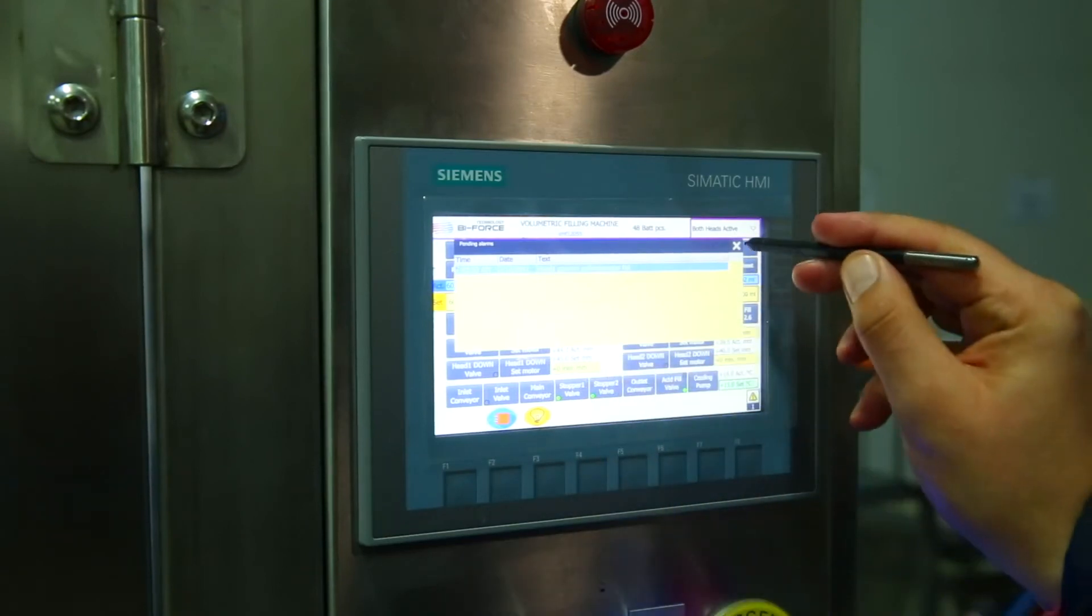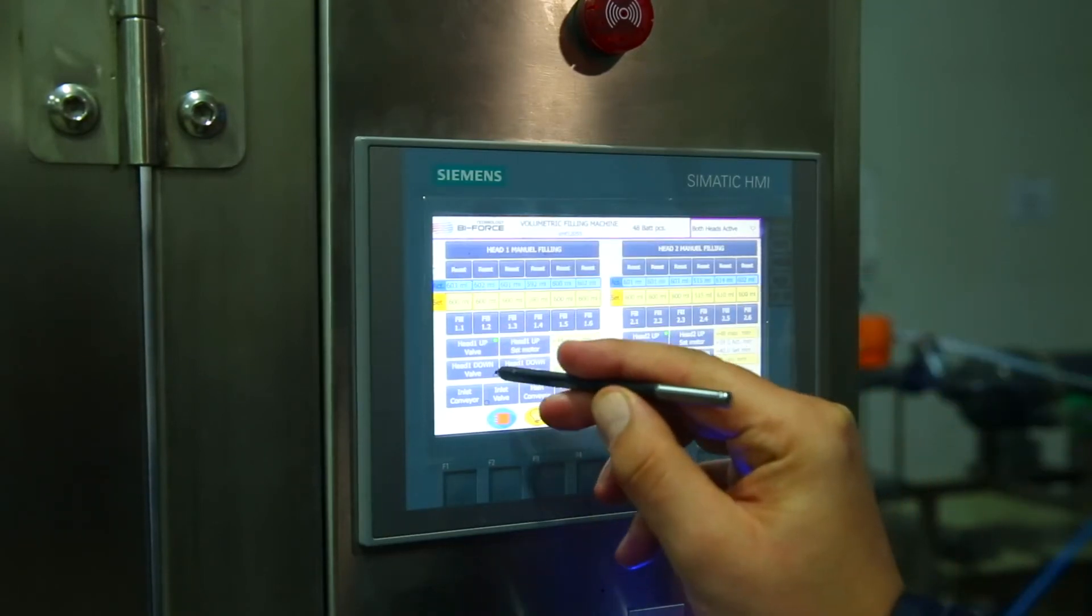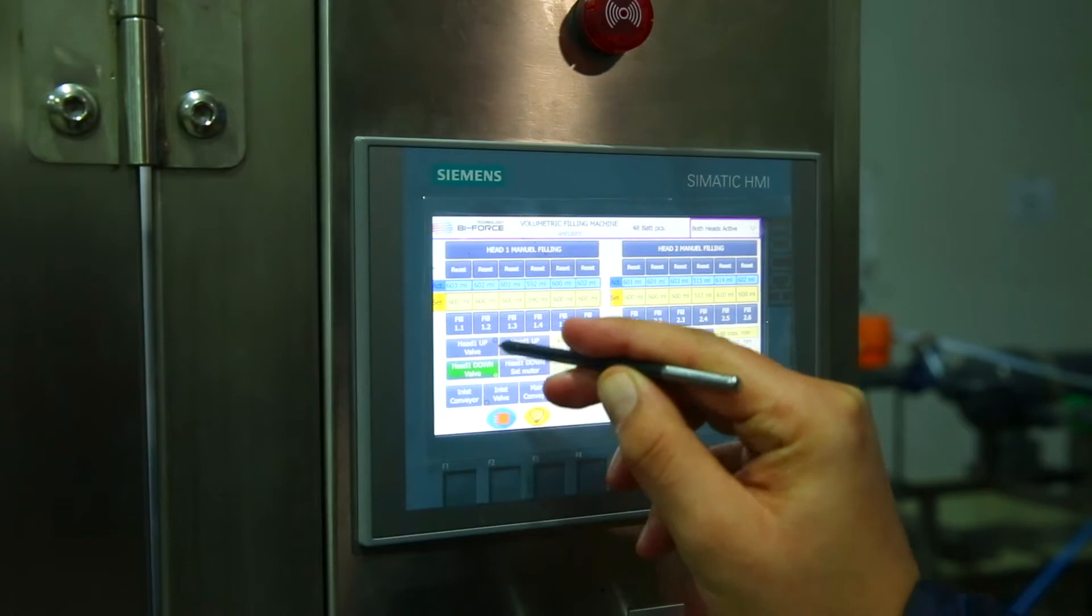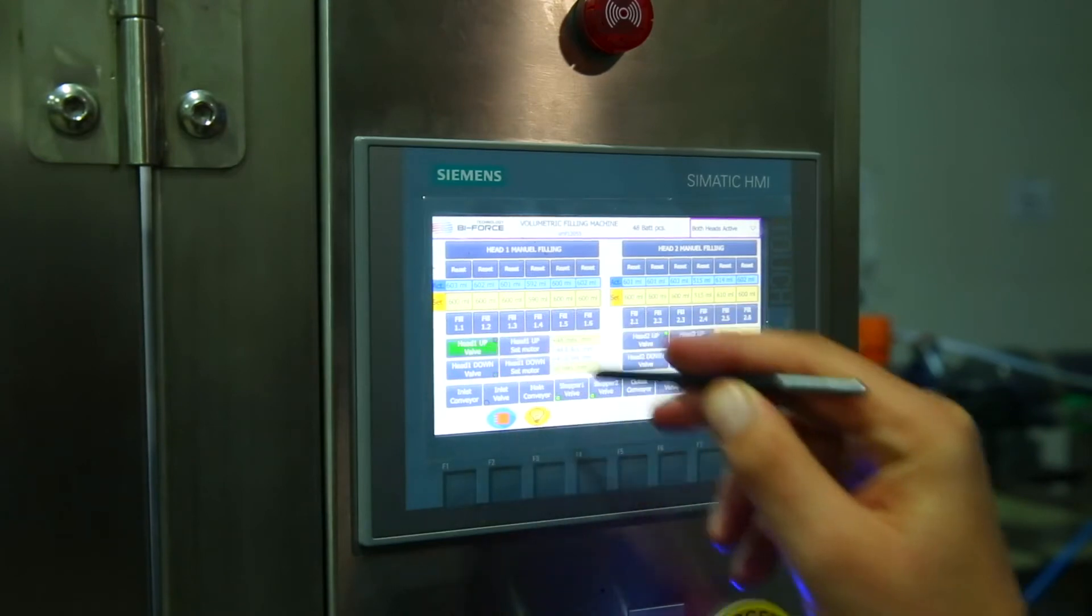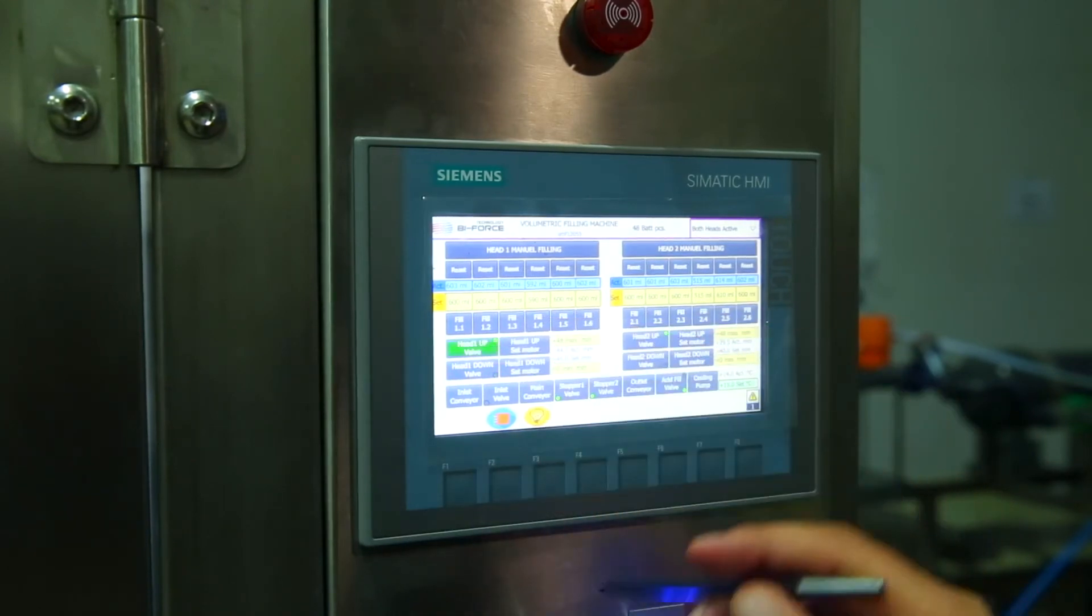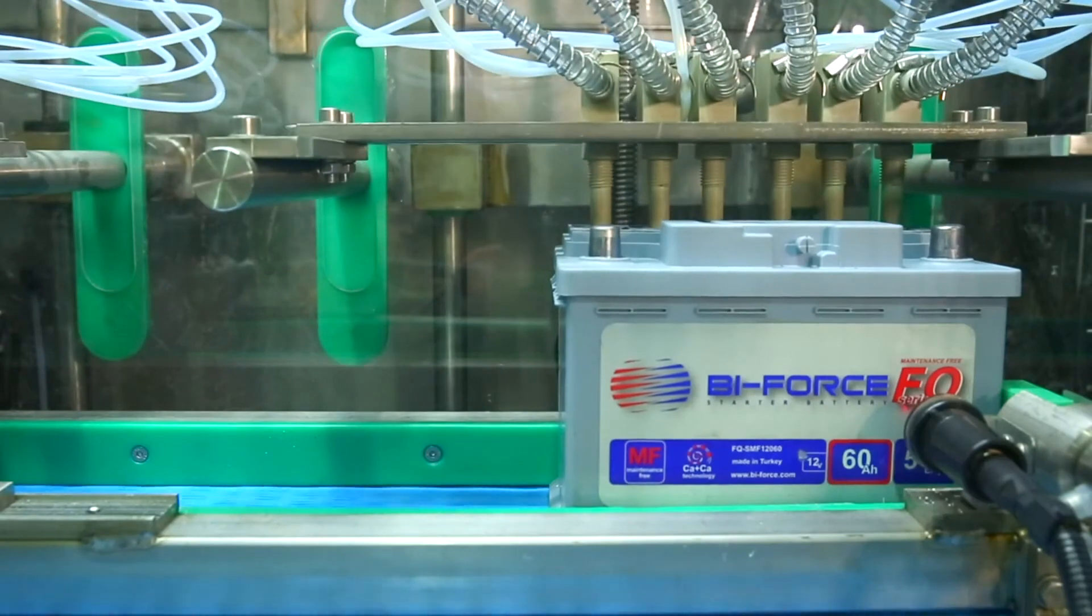Automation of technological processes is carried out by Siemens PLC. The machine is equipped with Siemens built-in screen which allows entering the necessary parameters and control the process of filling.